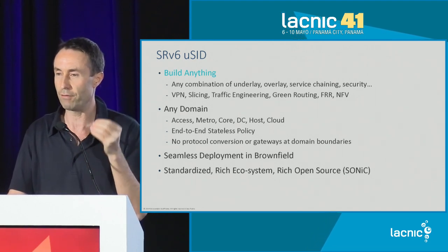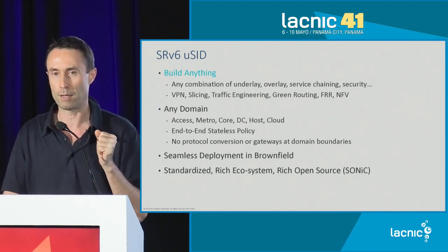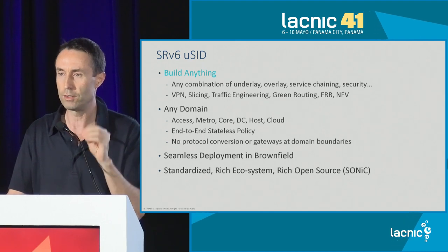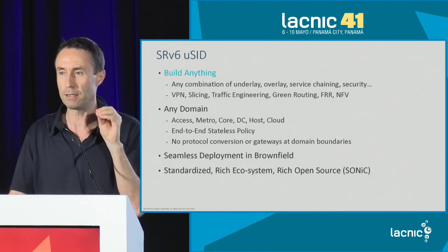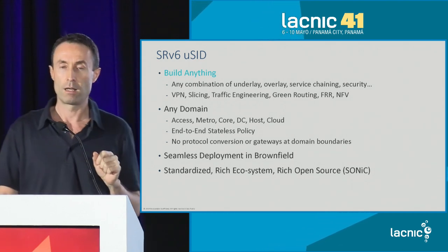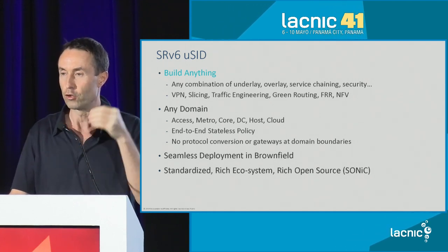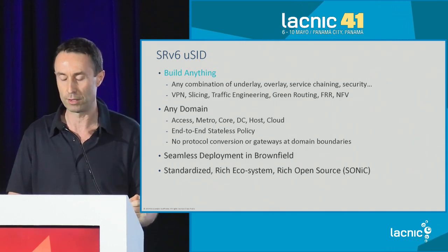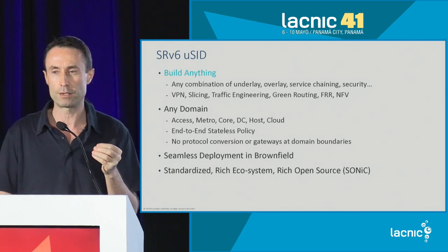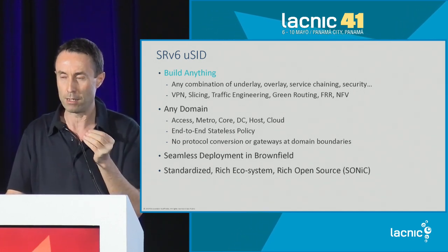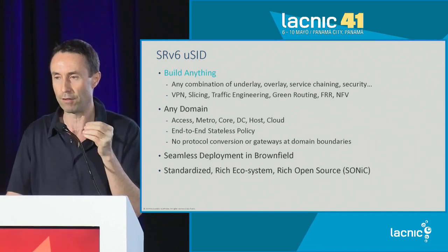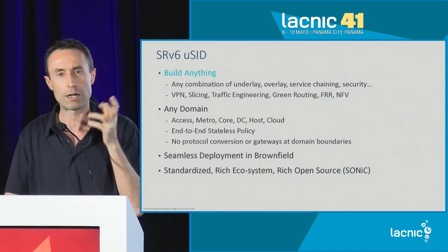This is the sole technology giving you end-to-end stateless policy. For example, if you do VXLAN in the data center and MPLS in the rest of the network, at the data center border you need to convert from VXLAN to MPLS — complex, low scale, high cost, low robustness. With SRV6 microsegments, you have an end-to-end data plane solution; you remove that gateway function and complexity at the data center border. As shown, you have seamless deployment in brownfield because we engineered SRV6 microsegment on the basis of IP, hiding the network program behind the classic longest match so legacy devices still work very well.